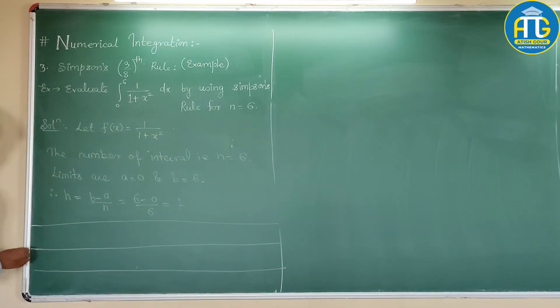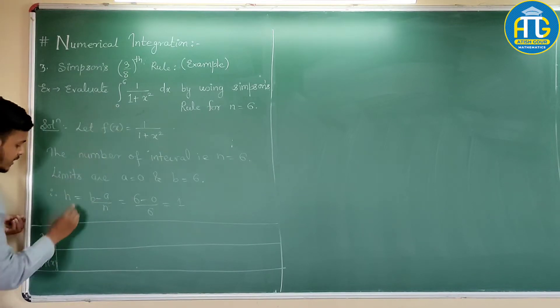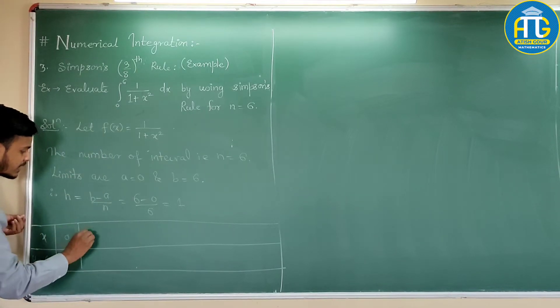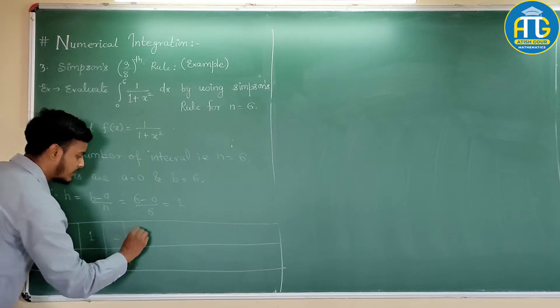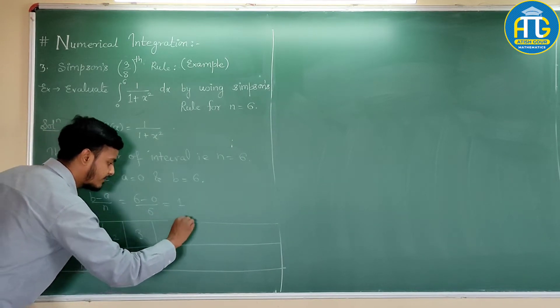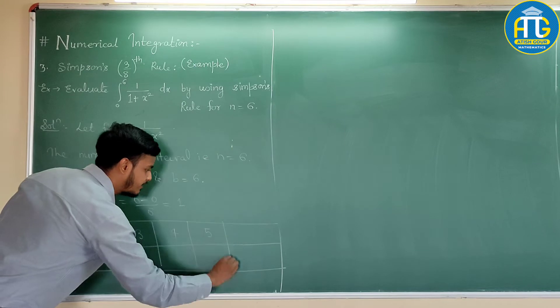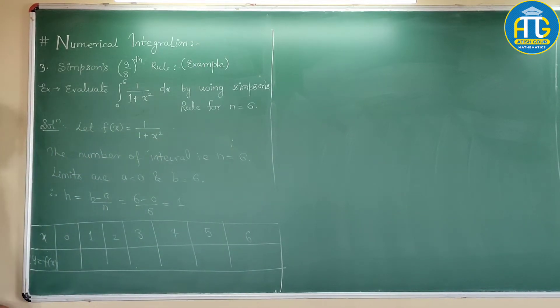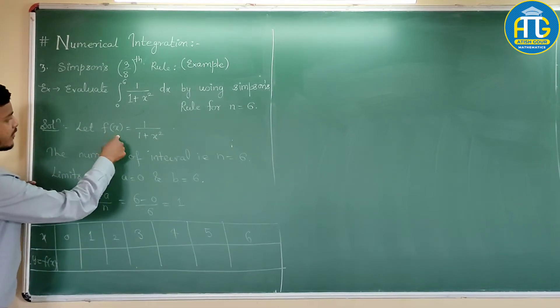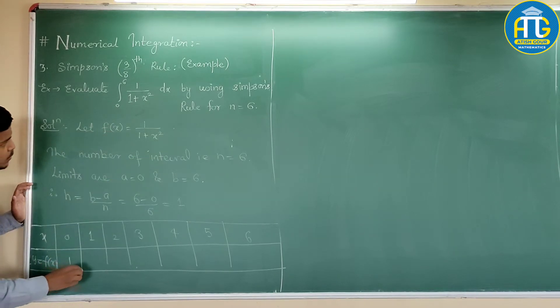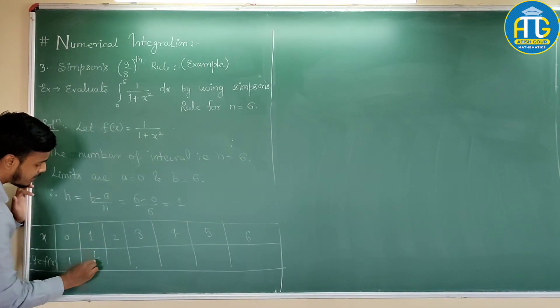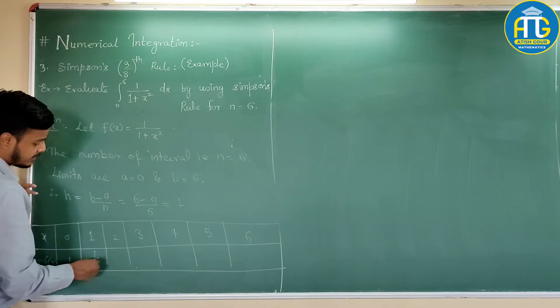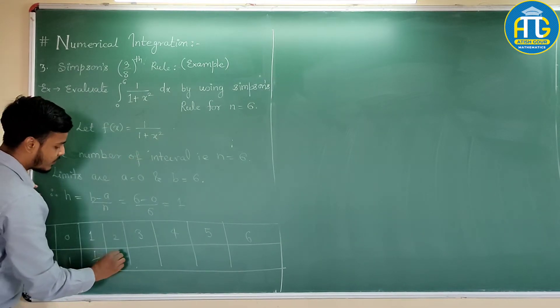So, here we have the values of x. Here values of y equals f of x. The very first value is 0, then 1, 2, 3, then 4, then 5 and then 6. And the corresponding value of f of x you can find out. This is 1. This is 1 plus 1, that is 1 by 2. Then this is 2 squared is 4.